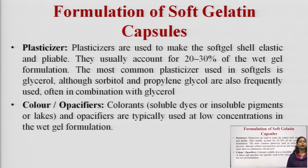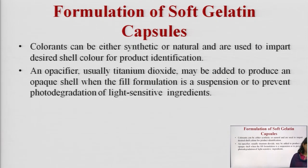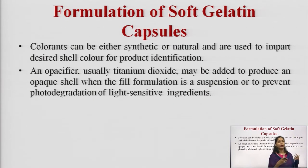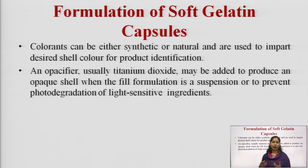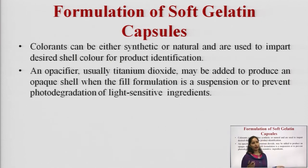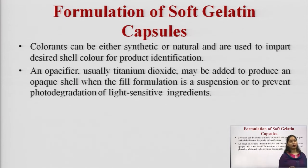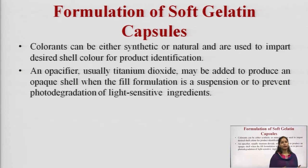Colors and opacifiers are also added. Colorants — such as soluble dyes, insoluble pigments, or lakes — and opacifiers are typically used at low concentration in the wet gel formulation. Colorants can be either synthetic or natural and are used to impart the desired shell color for product identification and elegance. For opacifiers, titanium dioxide is added to produce an opaque shell — either when the fill formulation is a suspension, or to prevent photo-degradation of light-sensitive ingredients.